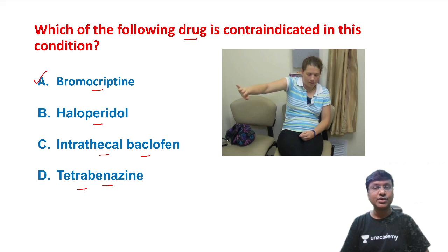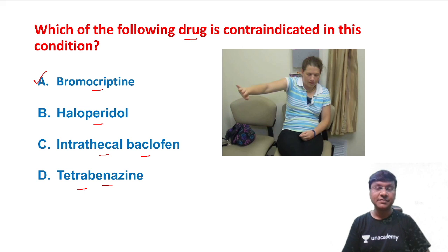Apart from anti-dopaminergic drugs, we can also give intrathecal baclofen and tetrabenazine for the treatment of hemibalismus.